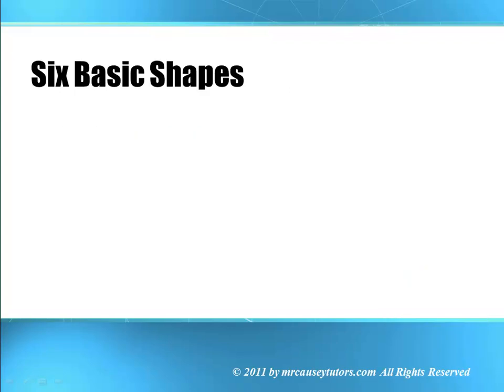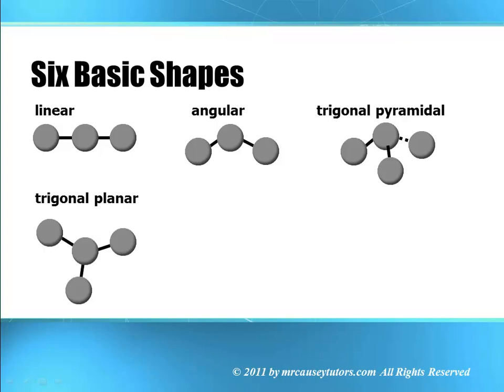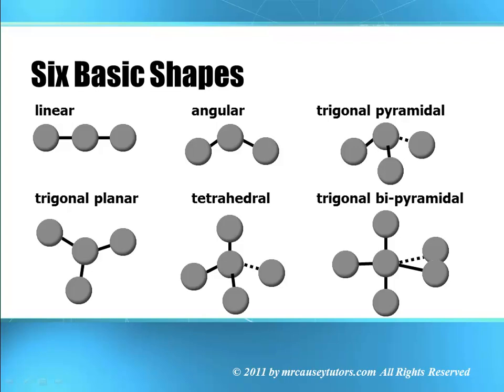Six basic shapes. We have linear, angular, trigonal pyramidal caused by an unbonded pair of electrons, trigonal planar, tetrahedral, and trigonal bipyramidal.